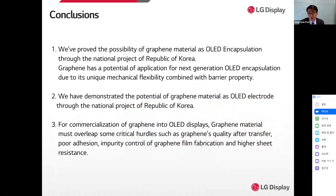Let me condense my main points. To begin with, we have proved the possibility of graphene material as OLED encapsulation through the National Project of the Republic of Korea. Graphene has a potential for application in next-generation OLED encapsulation due to its unique mechanical flexibility combined with barrier property. Furthermore, we have demonstrated the potential of graphene material as OLED anode electrode through the National Project of the Republic of Korea. Considering this pioneering process of defining the application of graphene in OLED display, I believe this demonstration itself will function as a foundation for developing graphene and OLED science one step ahead.